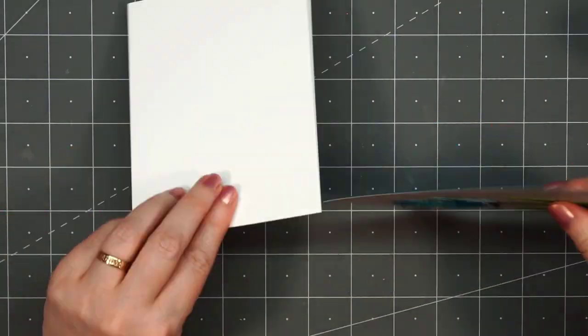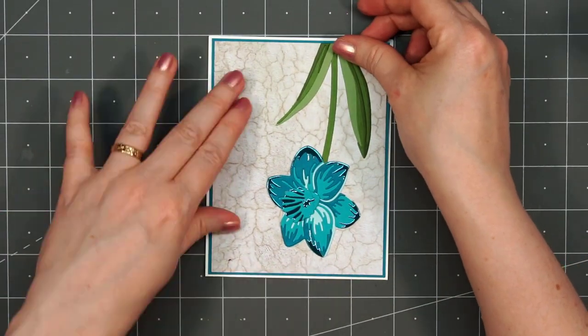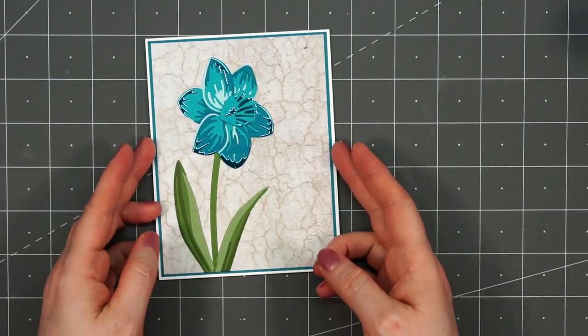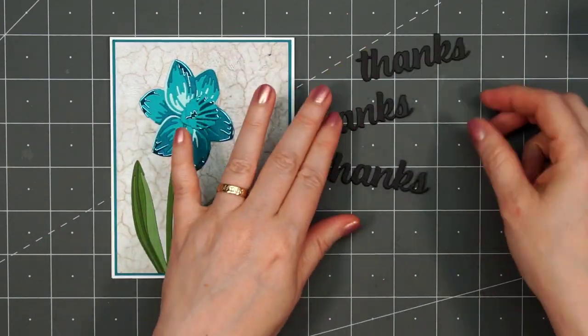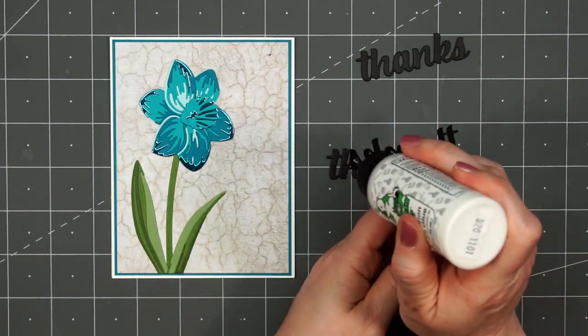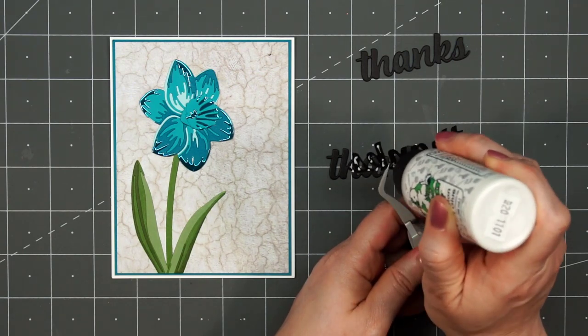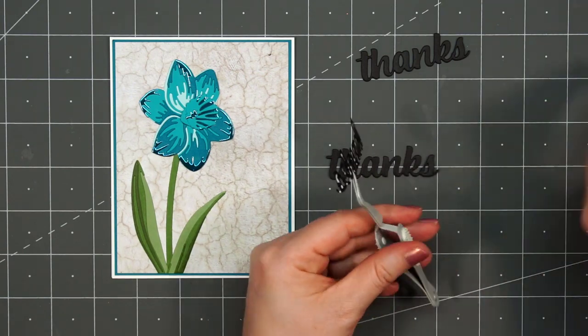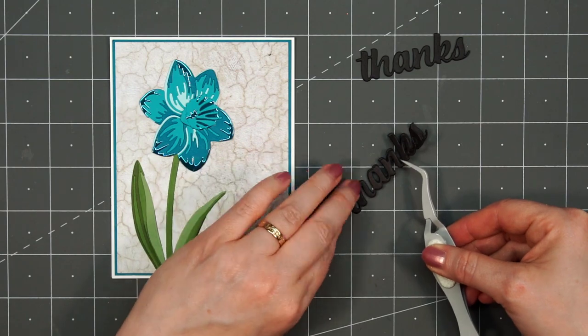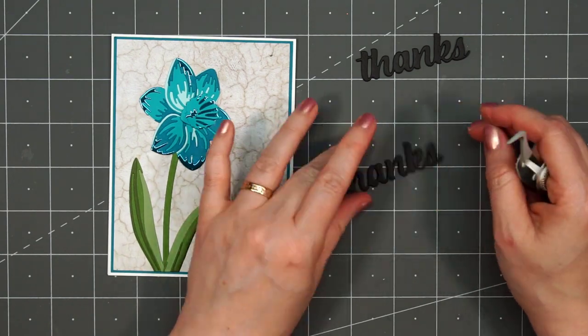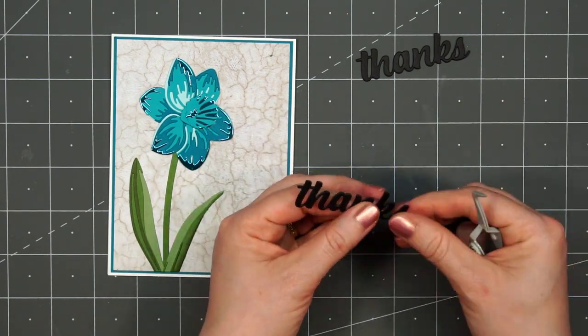I'll put my card front onto a card base. For this card, I will have about an eighth of an inch of that white card base showing. For this sentiment, I'm adding the word thanks. This is a die from Paper Rose. I cut it out three different times just to add a little extra dimension. I'll glue the first two together.